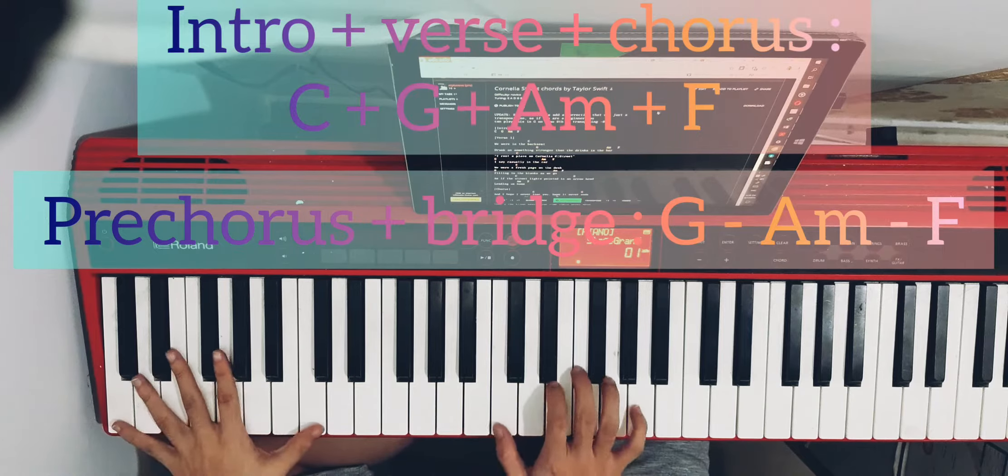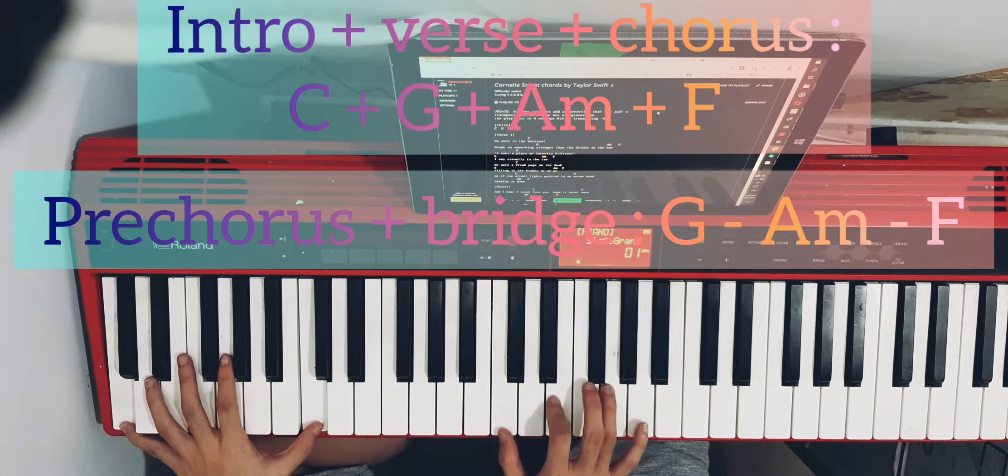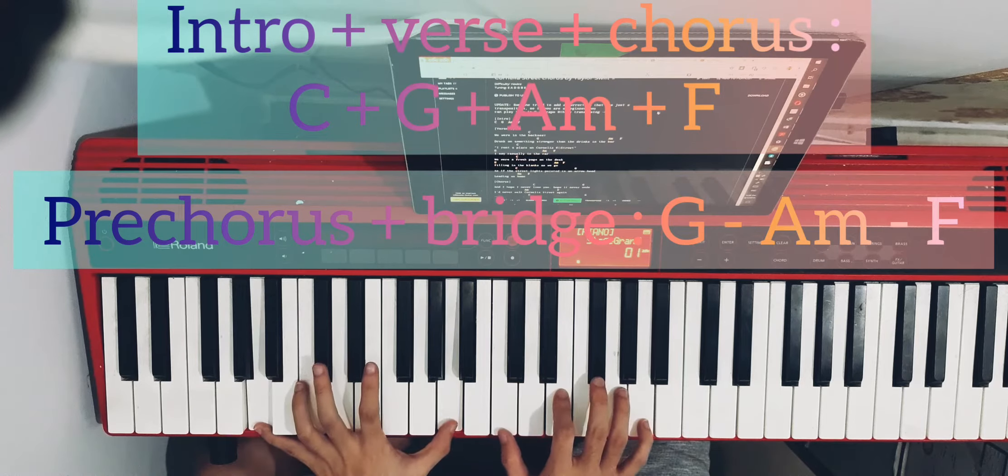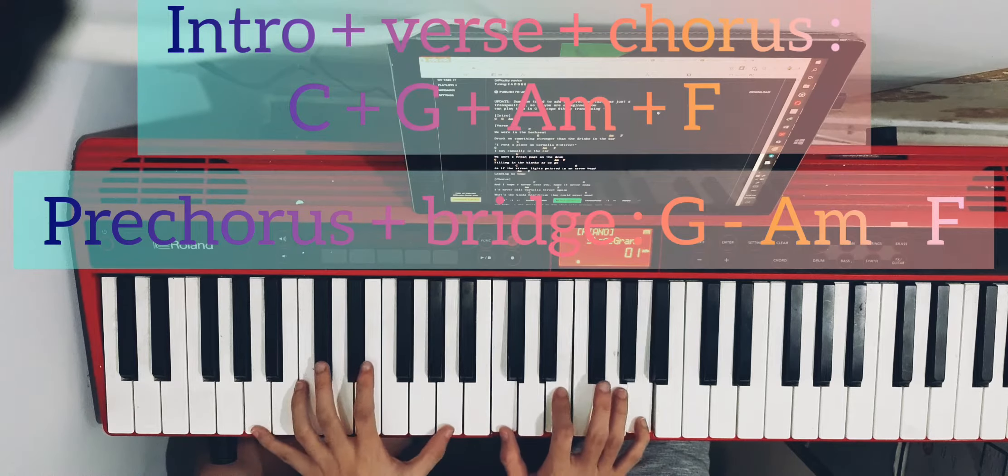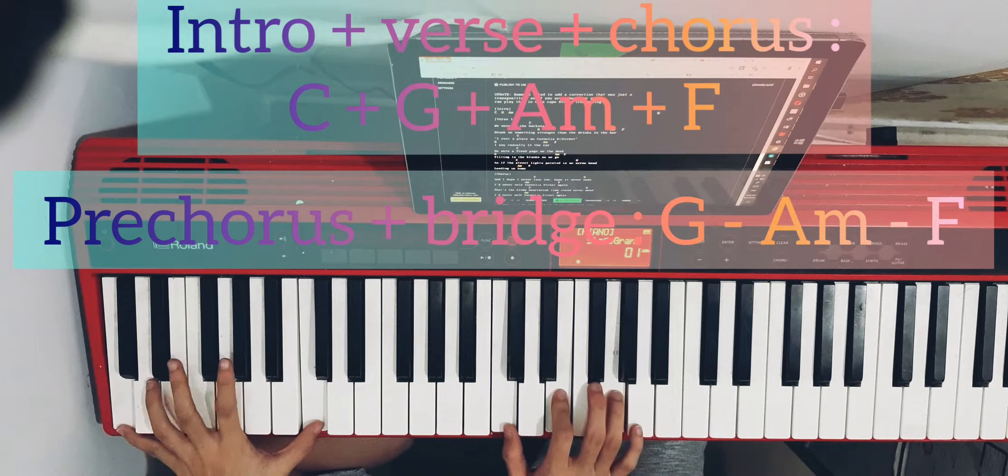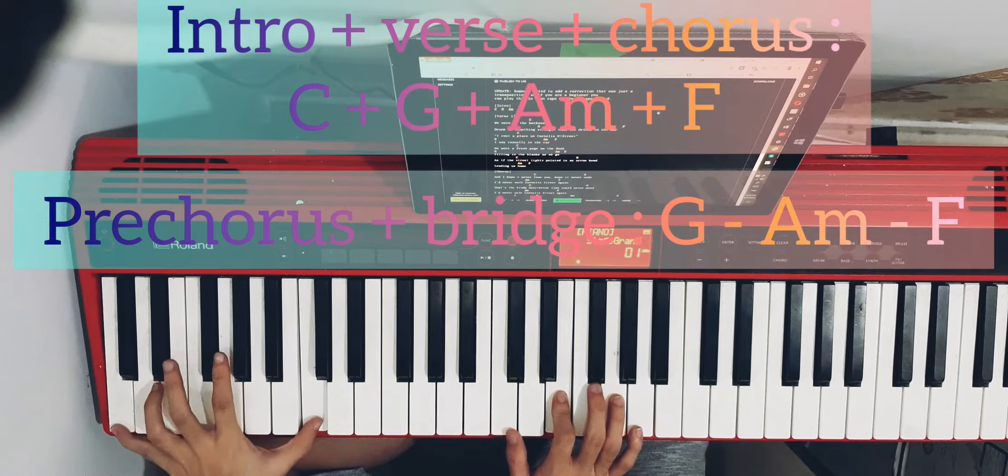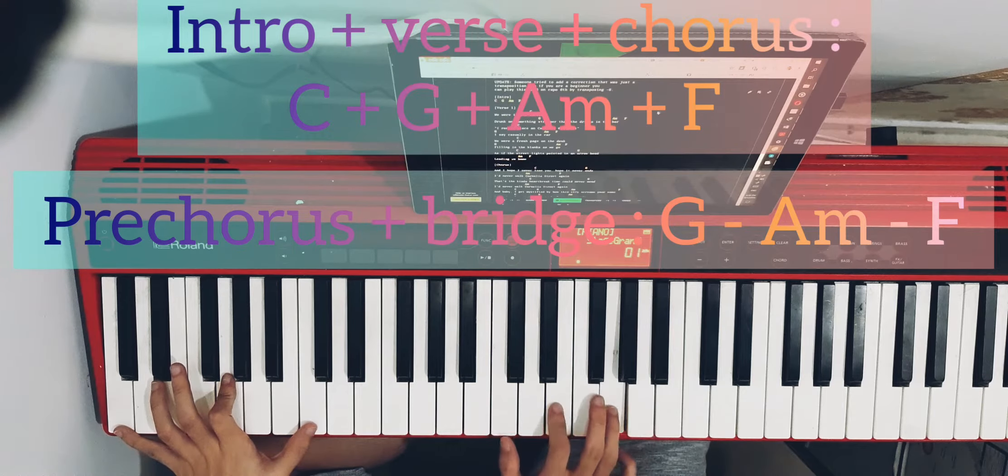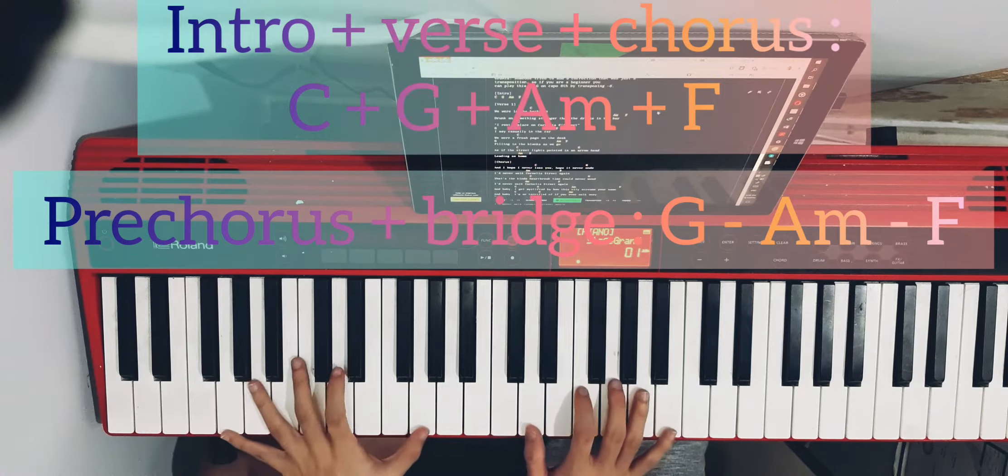We were in the back seat, drinking at the bar. The first chord is C - E G. You can add the G if you like. On the right hand is C E G.